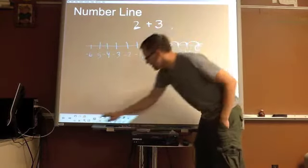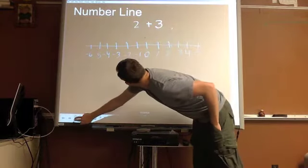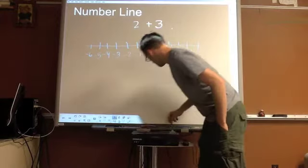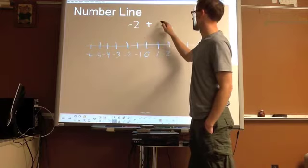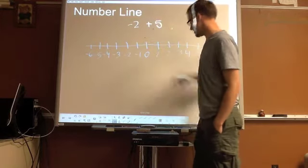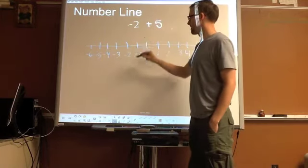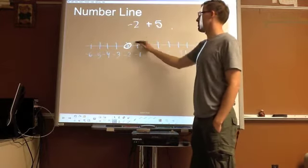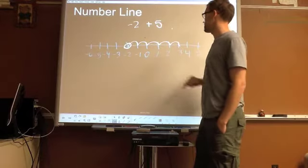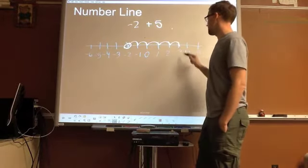Let's do one with a negative though. Let's do negative two plus five. Locate where your negative is. Here's negative two. Go to the right, five. One, two, three, four, five. Negative two plus five is three.